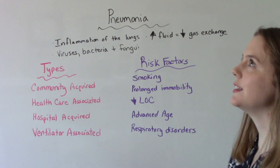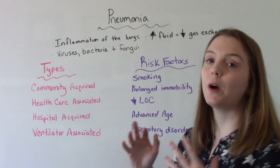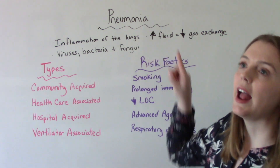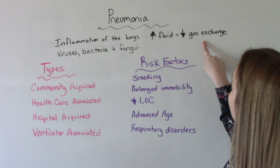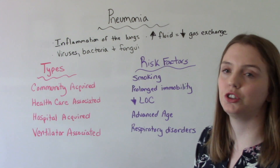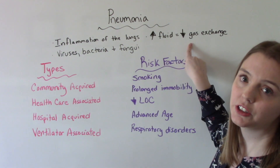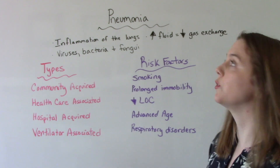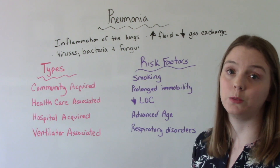What is pneumonia? Pneumonia is the inflammation of the lungs, and what happens is there is an excess amount of fluid. Because of that excess fluid, gas exchange isn't able to happen as effectively as it should. So that excess of fluid decreases gas exchange within the lungs, which we know is very important. Our lungs are not working at their full capacity when we have pneumonia.